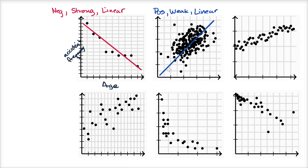There's also this notion of outliers. If this line is trying to describe the data, well we have some data that is fairly off the line. For example, even though we're saying it's a positive, weak, linear relationship, this one over here is reasonably high on the vertical variable but it's low on the horizontal variable. So this one right over here is an outlier — it's quite far away from the line. This is a little bit subjective: outliers are what looks pretty far from the rest of the data. This could also be an outlier.